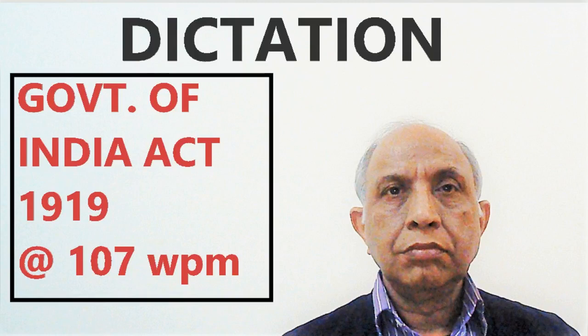Partial responsibility in provinces but no change in character of the central government. In the Government of India Act 1919, the spheres of the central and provincial governments were demarcated by a division of subjects into central and provincial. Generally speaking, the central subjects included all subjects directly administered by the Government of India or in which extra-provincial interests were dominant. The provincial subjects included subjects in which the interests of the provinces essentially predominated.